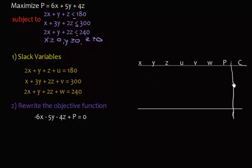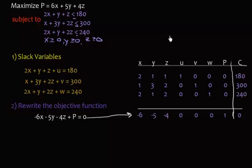So now I have my slack variables, I have my objective function, so let's set up the simplex table. I'm going to take all the coefficients from these equations and my objective function. Remember, the objective function will go down here. So write all the coefficients in my table. There is our initial simplex table.